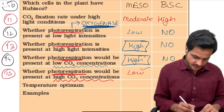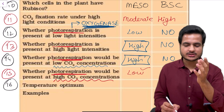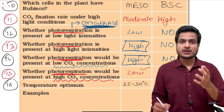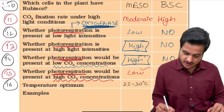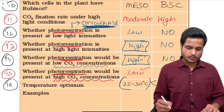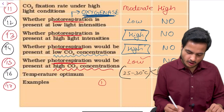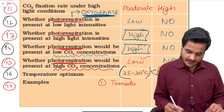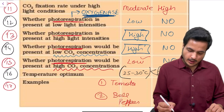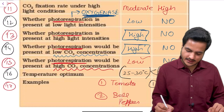The sixteenth question asks the temperature optimum for C3 and C4 plants. C3 plants belong to temperate regions, so their temperature optimum is 25 to 30 degrees Celsius. C4 plants are adapted for tropical areas, so their temperature optimum ranges from 30 to 40 degrees Celsius, which is higher than C3 plants. The last question asks for examples: C3 plants include tomato and bell pepper, while C4 plants include maize and sorghum.